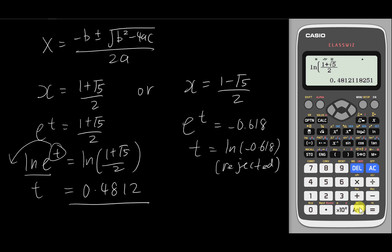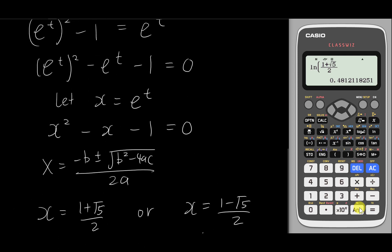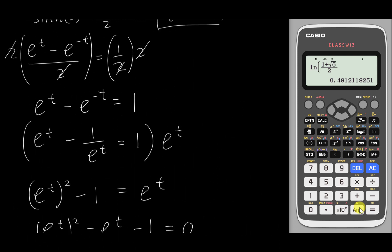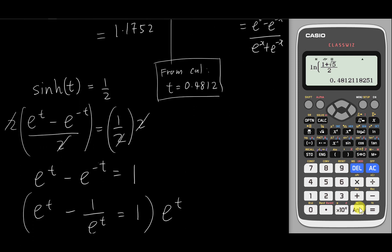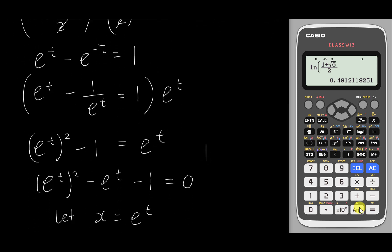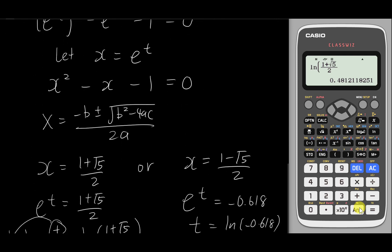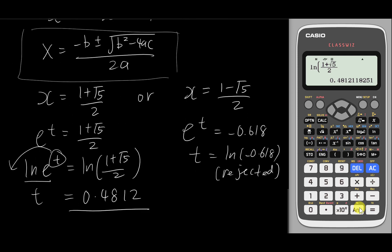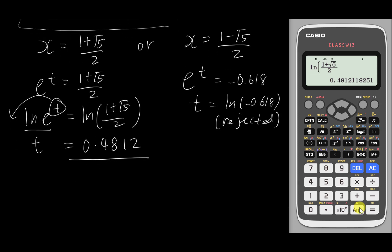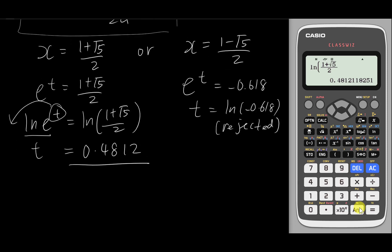You remember we used the calculator earlier and got one answer. Scrolling up, we can confirm from the calculator that t = 0.4812. So doing it manually involves a lot of steps — even more if you apply the quadratic formula by hand. Here we used the calculator to save time, and we still get the same answer.